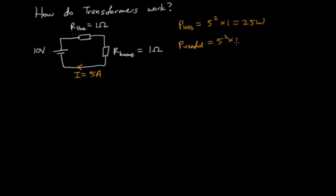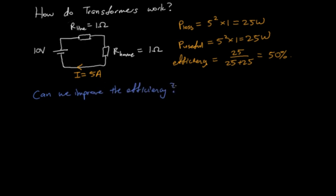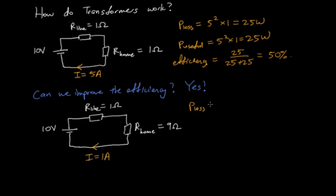One can calculate the efficiency of this system to be 50%. Now let's suppose you wanted to increase the efficiency and so you raise your home's resistance to 9 ohms. Sure enough, the current has dropped and the efficiency has increased.